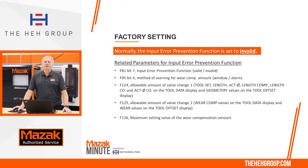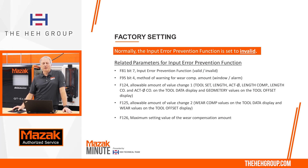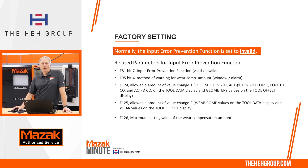Normally, the input prevention function is invalid from the factory. Parameter F81, bit 7 is the parameter that will validate it. F95, bit 4 gives the ability to have a window appear on screen if the increment value is larger than a predetermined parameter. F124, F125, and F126 are the parameters used for the maximum allowance.